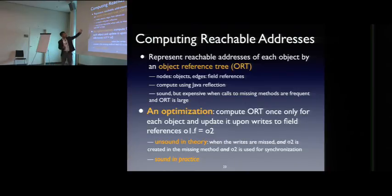So we have developed optimization in order to improve performance of this. The key idea of this is very simple. Actually, we don't need to compute an OR tree every time we see a missing method. Instead, we only need to compute ORT once for each object. And then we update the tree upon writes to field reference. If this is not very frequent, then we are good. And if this is not inside the missing method, we are also good. The only condition for this approach to be unsound is when the writes like this are missed, and O2 is created in the missing method, and O2 is used for synchronization. But all these conditions to assess all of them in practice is very difficult. So actually, in our all experiments, in practice, we didn't find any violation of this condition. So it is sound in practice.